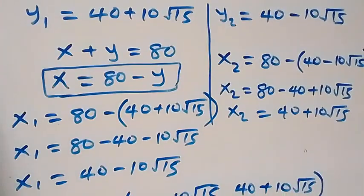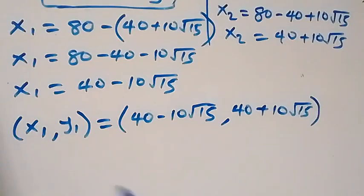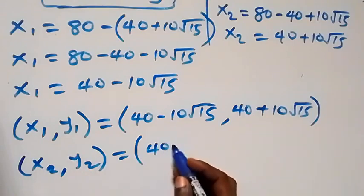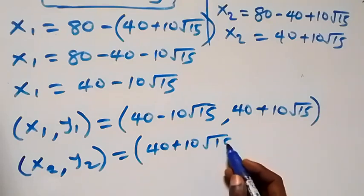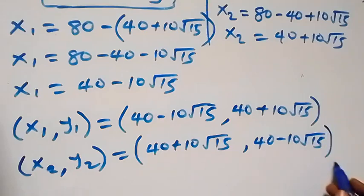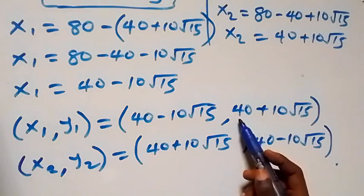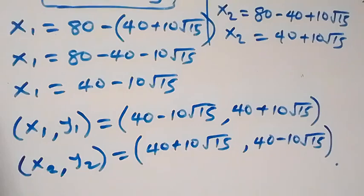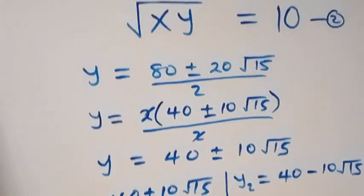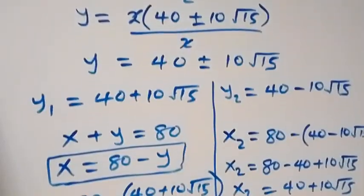So the two solution pairs are: (x₁, y₁) = (40 − 10√15, 40 + 10√15) and (x₂, y₂) = (40 + 10√15, 40 − 10√15). Notice that x and y swap between the two solutions, so both satisfy the original equations. Thank you for watching — don't forget to subscribe, leave comments, and see you next class!